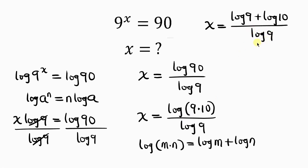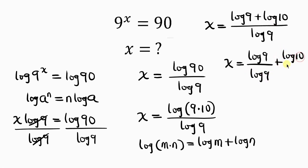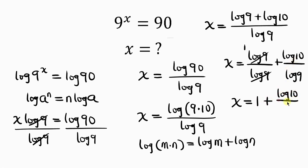Our next step would be to split the fraction. So we have x equal to log 9 divided by log 9, plus log 10 divided by log 9. Notice that log 9 divided by log 9 gives 1, so this is x equal to 1 plus log 10 all over log 9.